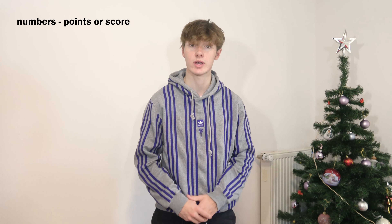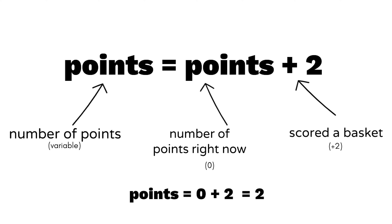Numbers are another type of variable. For example, points or score, like in our basketball game. We'll first assign the value 0 to points, since we don't have any points before we'd start. Then we score baskets.